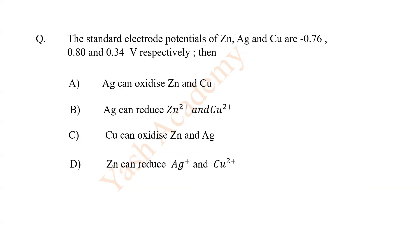The standard electrode potential of zinc, silver and copper are minus 0.76, 0.80 and 0.34 volt respectively. Then D, zinc can reduce Ag plus and Cu 2 plus ions.